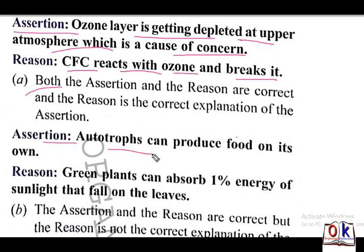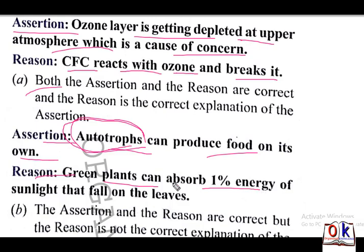Assertion: autotrophs can produce food on their own. Autotrophs can prepare their food by themselves. Reason: green plants can absorb 1% energy of sunlight that falls on the leaves. The reason is correct, but it does not explain how autotrophs prepare their food. So both assertion and reason are correct but reason is not the correct explanation — answer will be B.